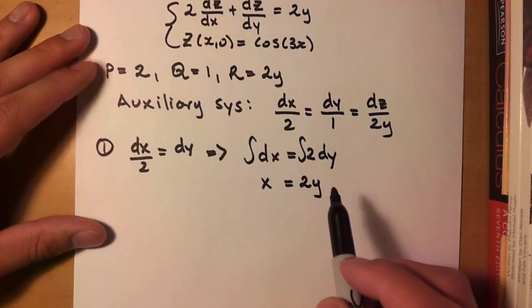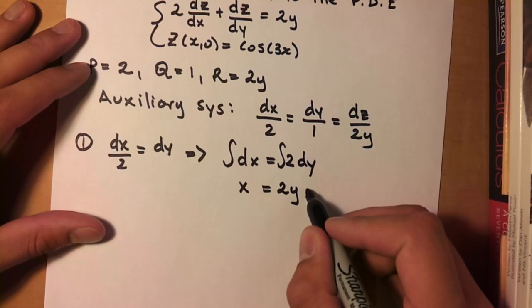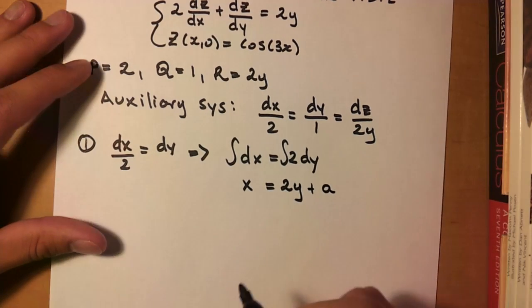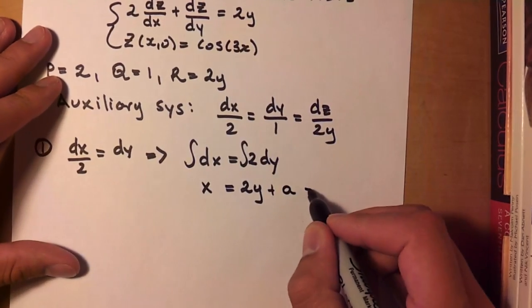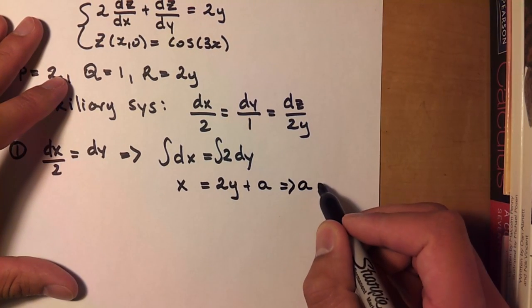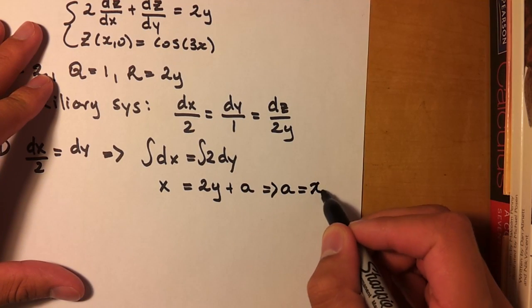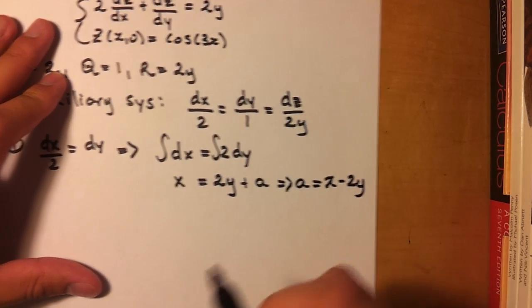But you must also include a constant on either side of the equation. It doesn't matter. So I'm just going to put it on this side, just because I have space. And then you want to solve for your constant. And you'll see why in a bit. So you have x minus 2y.